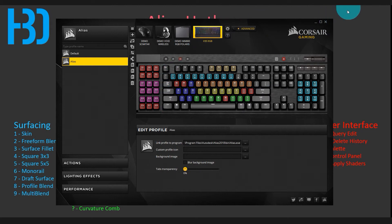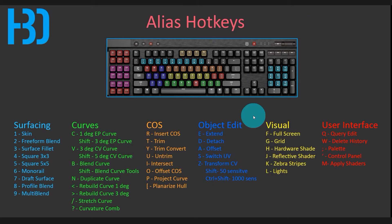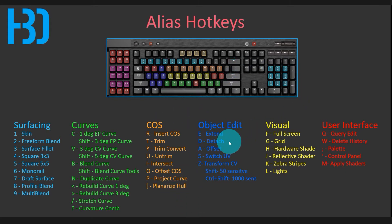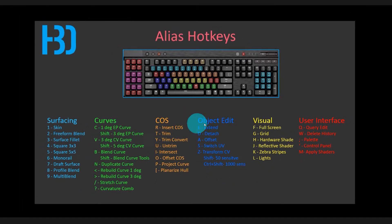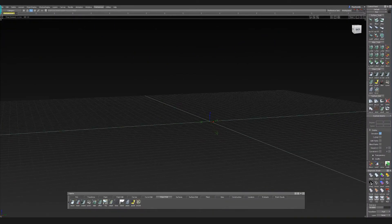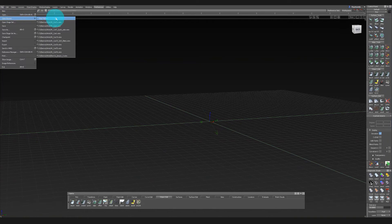Here are all my curve on surface hotkeys. Then I have all my object edits — detach, extend. My number keys are all used for surfacing: the ones I use most are skin, freeform blend, fillet, square five-by-five. My visual display hotkeys are also in there. Doing all this has really made my workflow a lot quicker.